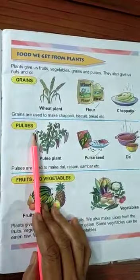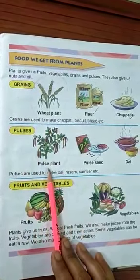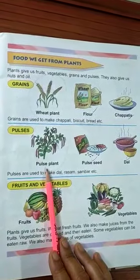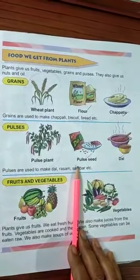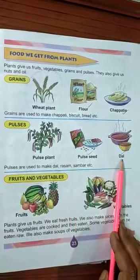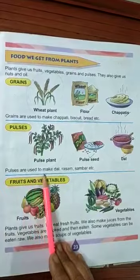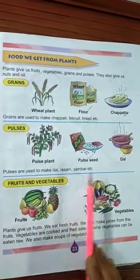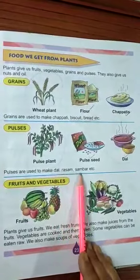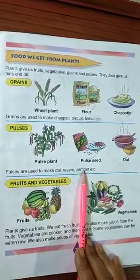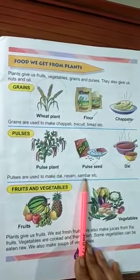आगे बढ़ते हैं pulses की ओर। Pulses means दाल — यहाँ दाल के पौधे का चित्र दिया हुआ है। दाल कई रंगों की होती है — लाल, पीली, हरी। Pulses are used to make दाल, रसम, सांबर, etc. रसम और सांबर South Indian food हैं जिन्हें हम इडली के साथ खाते हैं।